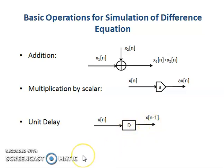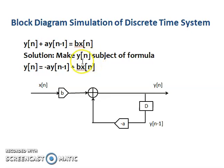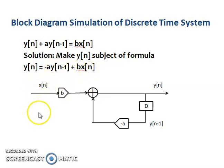A simple example is presented here. We have the difference equation y(n) + a·y(n-1) = b·x(n). To simulate the system in a block diagram, we focus on the current response y(n), making it the subject of formula. From this equation we obtain: y(n) = -a·y(n-1) + b·x(n).